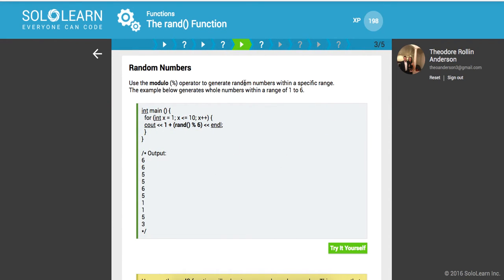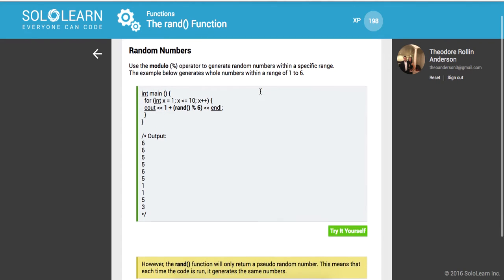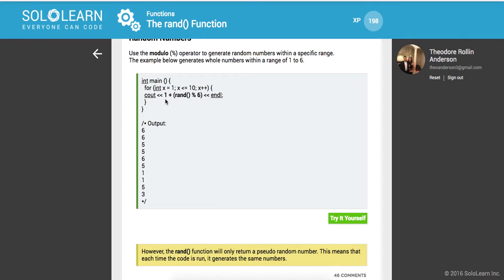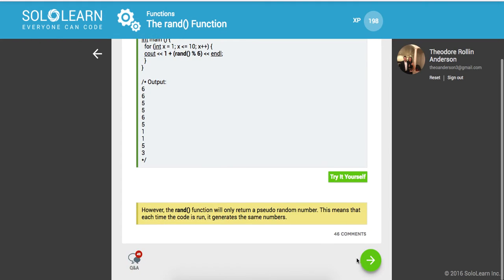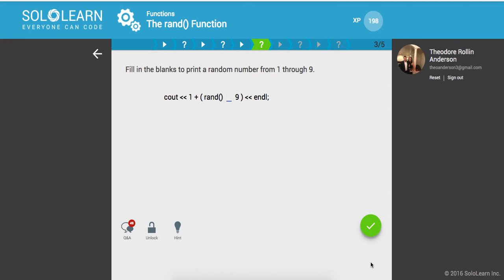So you use the modular operator to generate random numbers within a specific range. The example below generates whole numbers with a range of 1 to 6. So we call RAND modulus 6. Here's the lower bound, and here's the upper bound. So we're going to say modulus. This is going to be 1 to 9. Awesome.